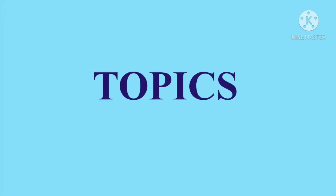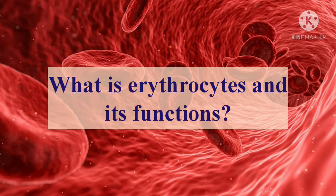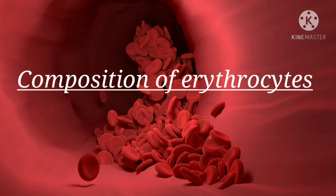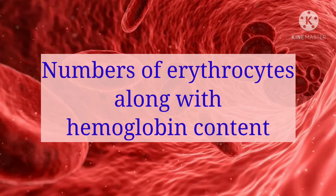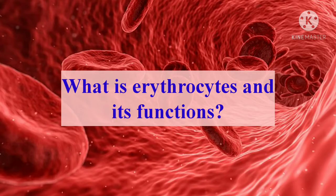The topics which we are going to study in this video are: what is erythrocytes and its function, second, shape of erythrocytes in different animals, third, composition of erythrocytes, fourth, size of erythrocytes in different species of animal, fifth, numbers of erythrocytes along with hemoglobin content in different species, and last, we are going to study about lifespan of erythrocytes. So let's start with what is erythrocytes and its function.